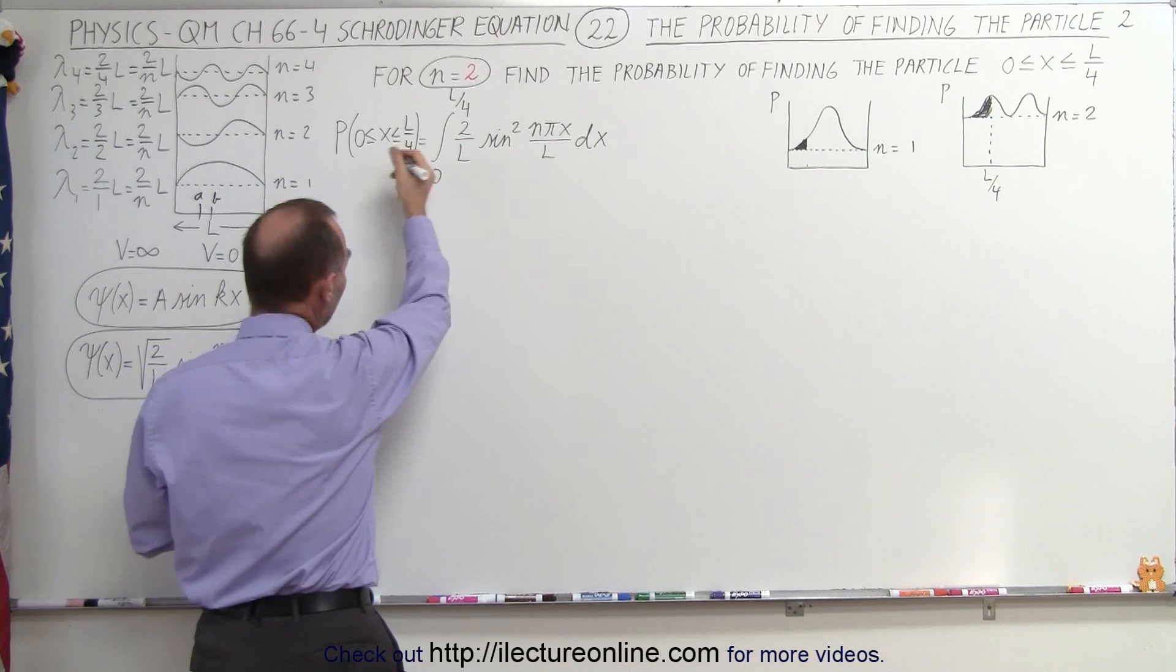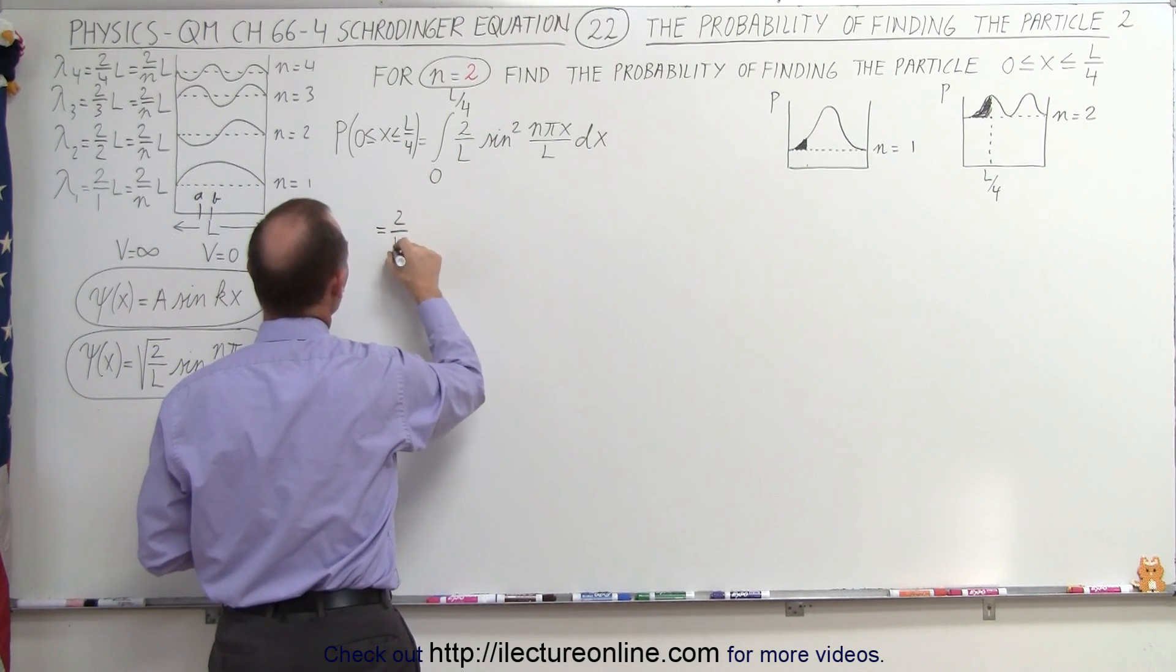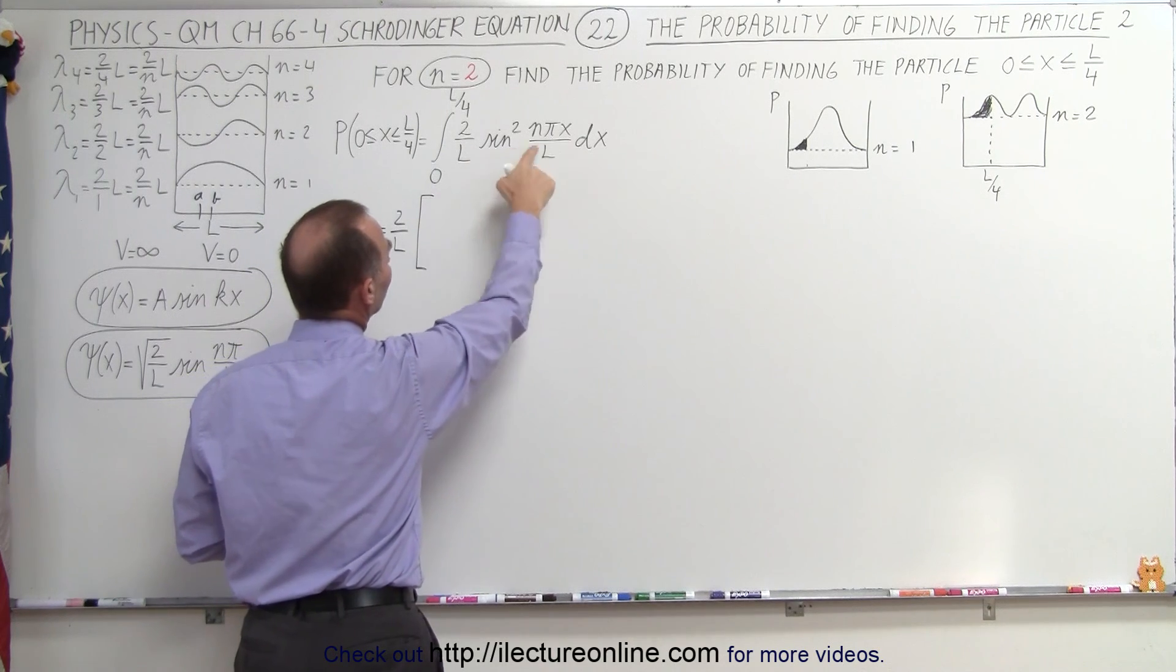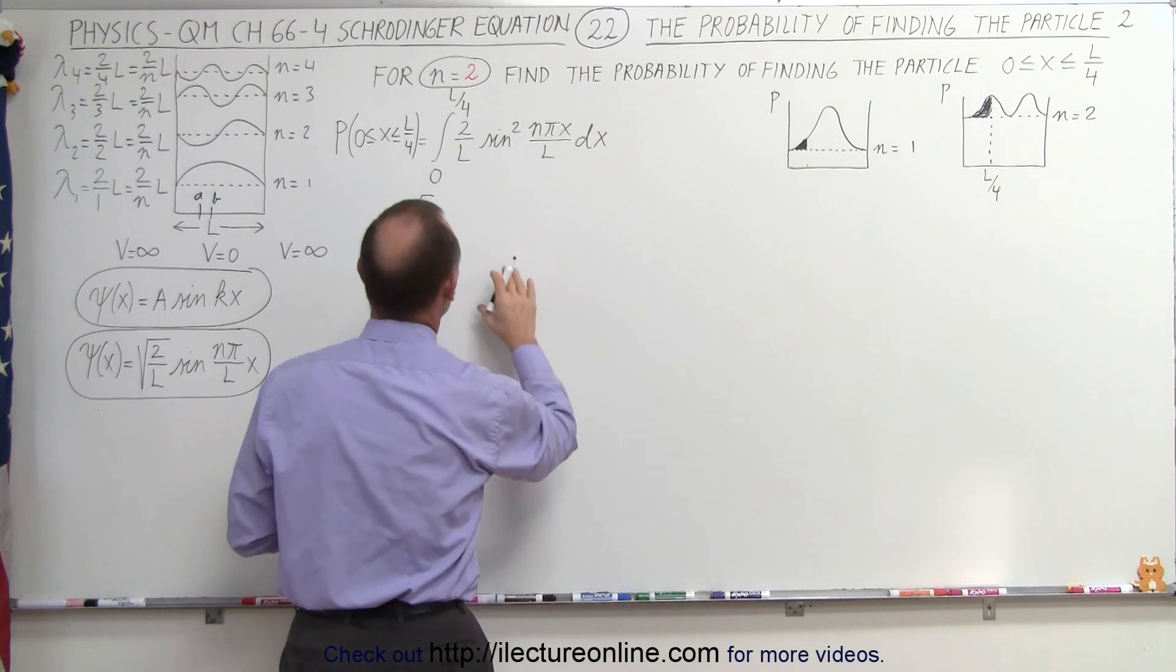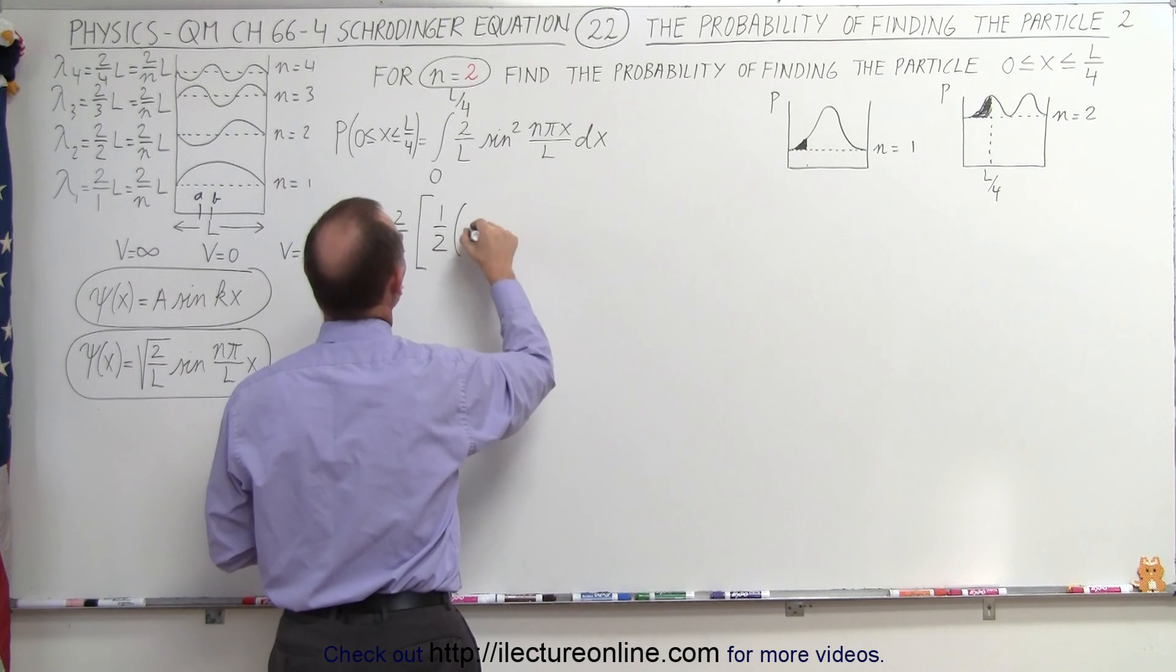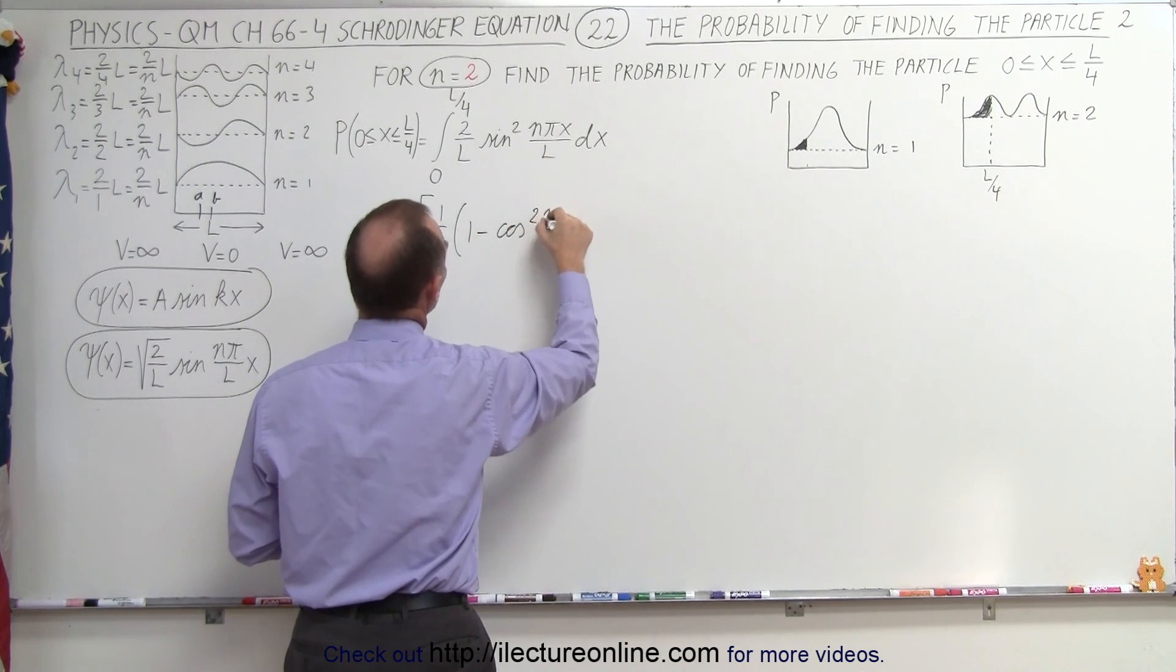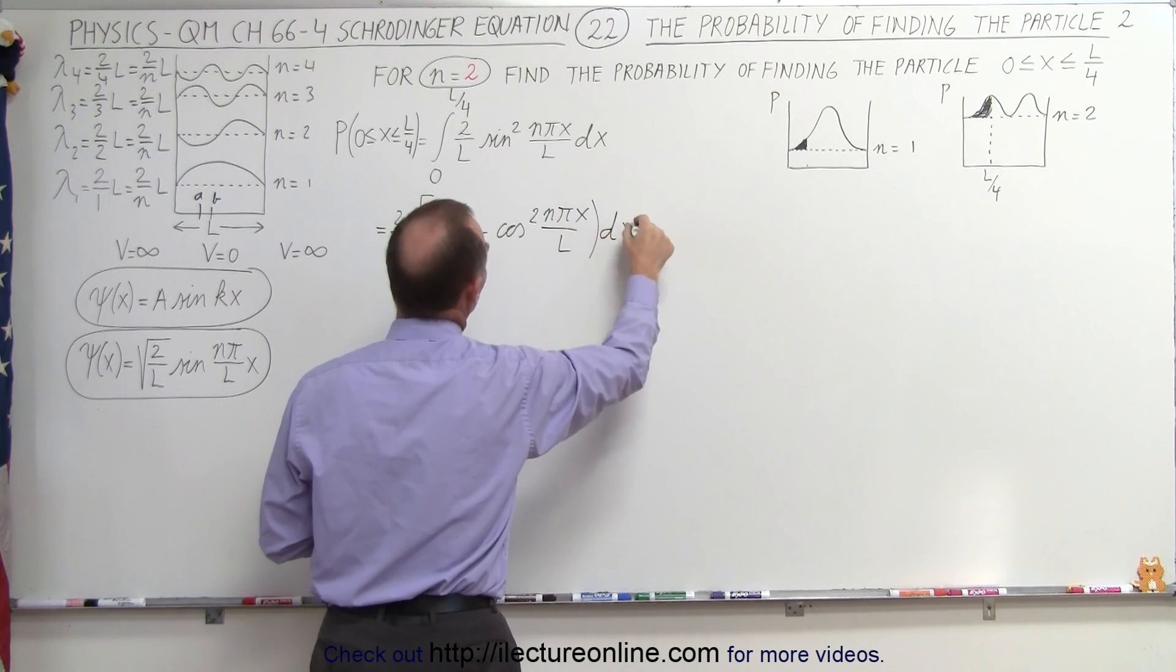We multiply times dx and then integrate over the interval we're interested in. When we do that we get the following: we can pull out the 2 over L, so this is equal to 2 over L. The sine squared of this angle we're going to separate using a trigonometric identity that would be 1 half times 1 minus the cosine of twice that angle, 2 n pi x over L times dx.